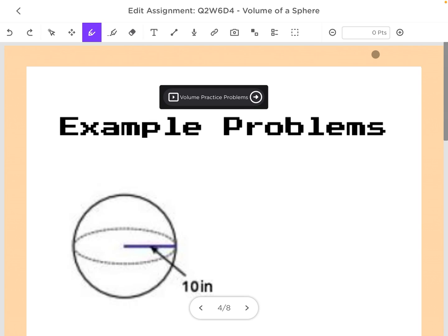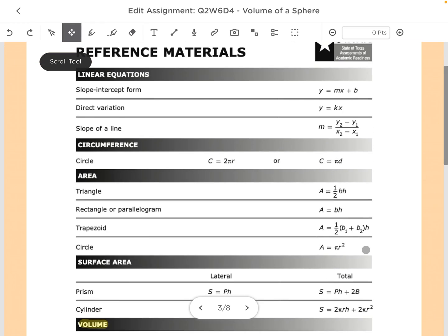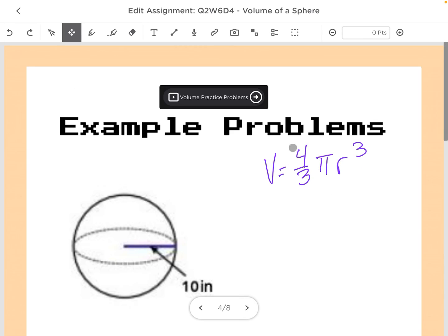So first step we do, write our formula: V equals four-thirds pi r cubed. And just to verify I wrote it correctly, it doesn't hurt to look back and check. Four-thirds pi r cubed. Okay.